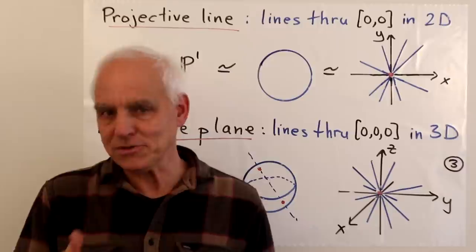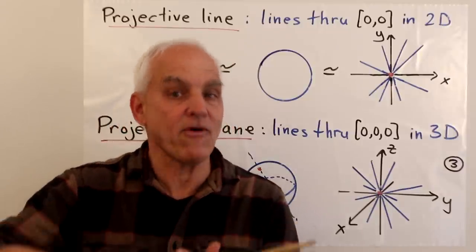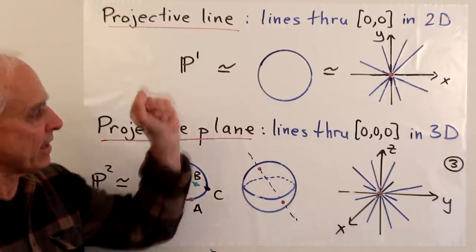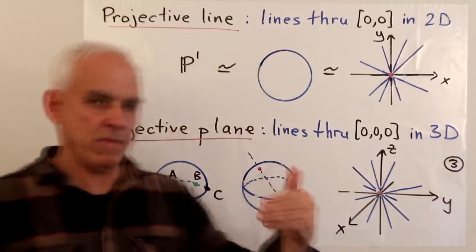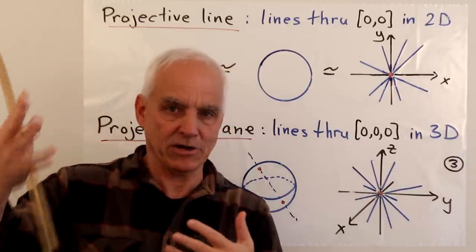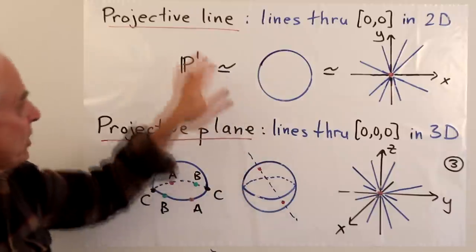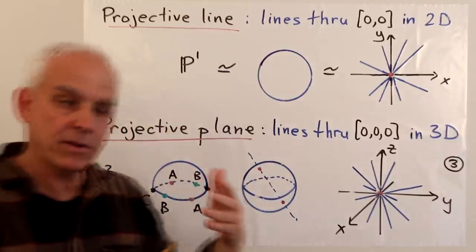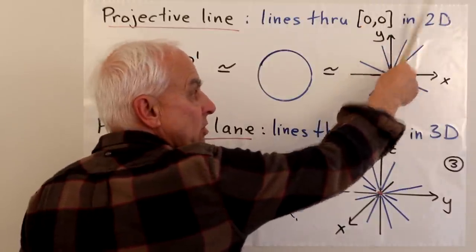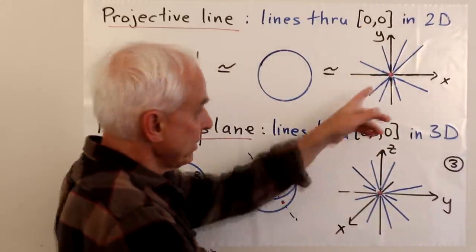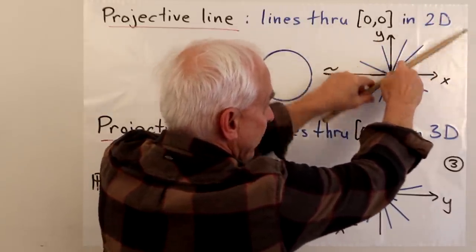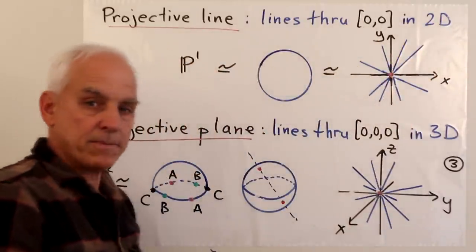I also want to touch base with the idea of projective space, and talk about how projective geometry naturally leads us to think in higher dimensions. We talked about the projective line previously, and saw that one way of thinking about it is as the space of lines through the origin in two-dimensional space. There's the origin, and we look at all lines through that point — that's really the projective line.